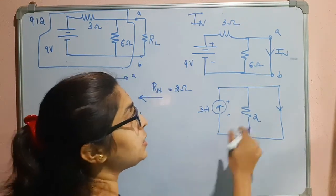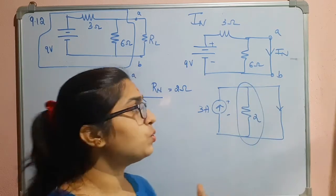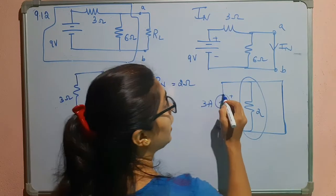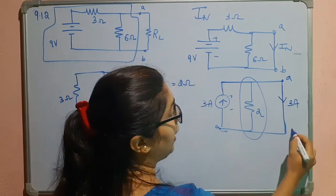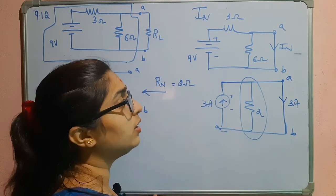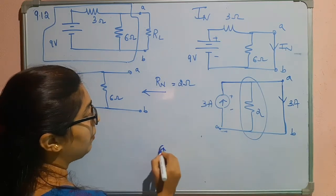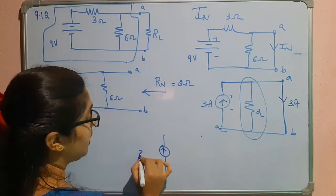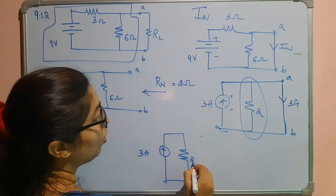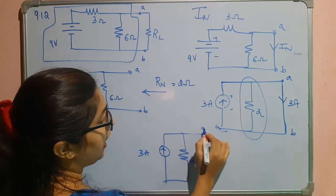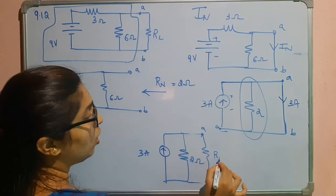The resistance is in parallel with the shorted branch, which means that portion becomes redundant — there is no use of it. All the current flows through the shorted path, so 3 amperes flows from a to b. We can now write the Norton's equivalent: the current enters in this direction, so we have a Norton's current of 3 amperes in parallel with the Norton's resistance of 2 ohms, and the terminals a and b where the load resistor is connected.